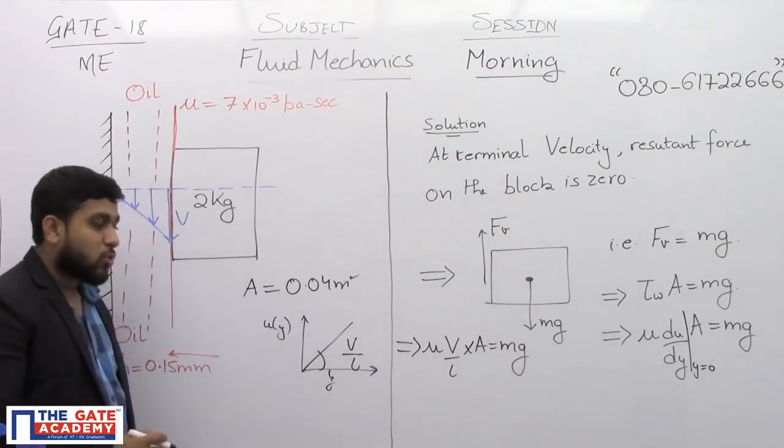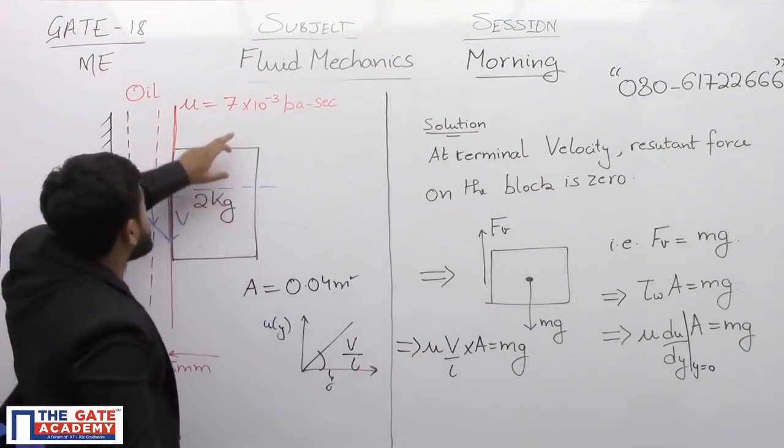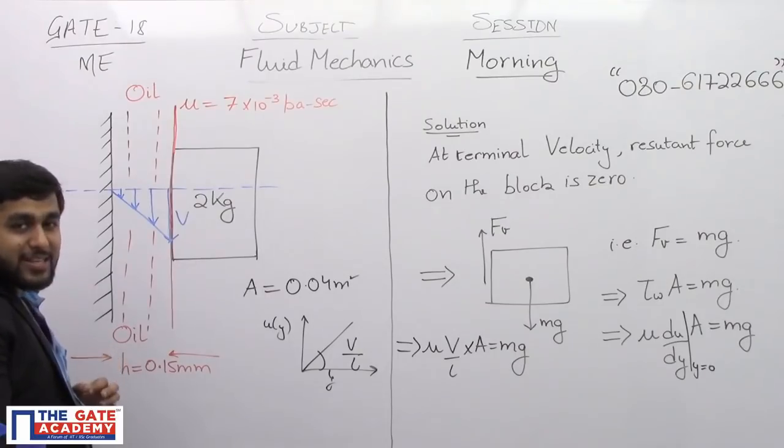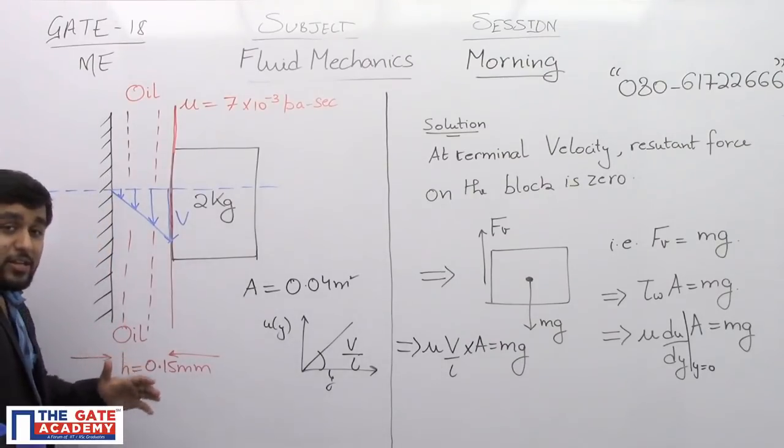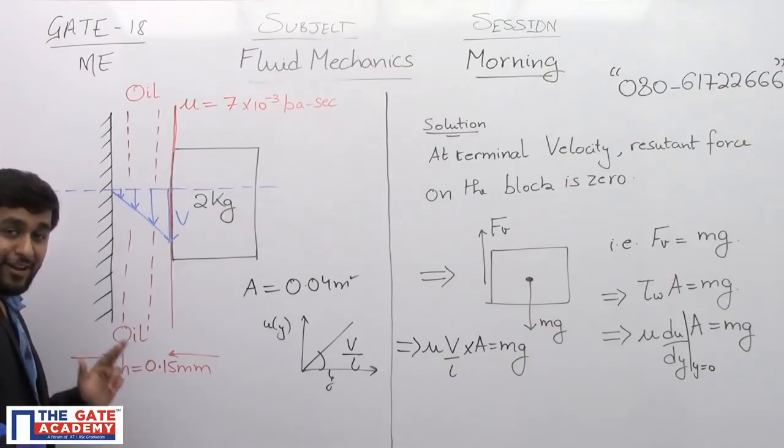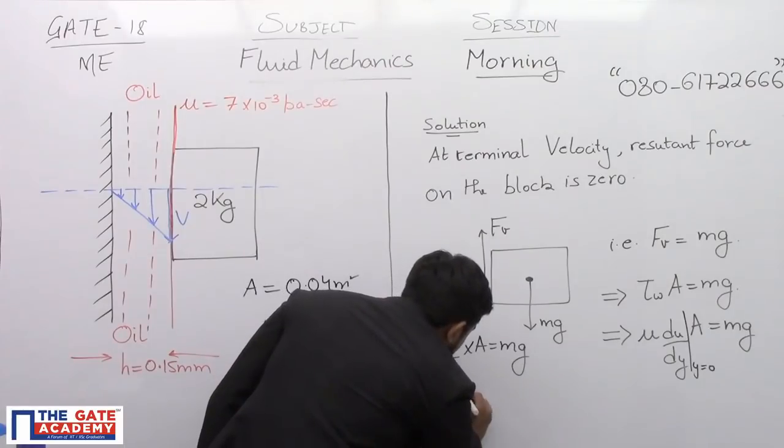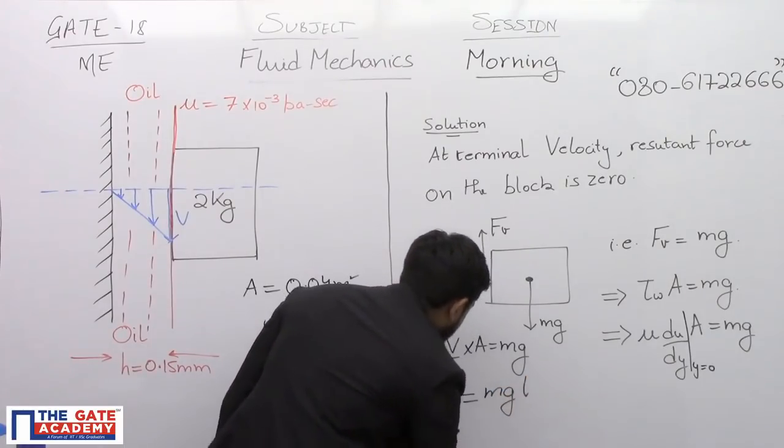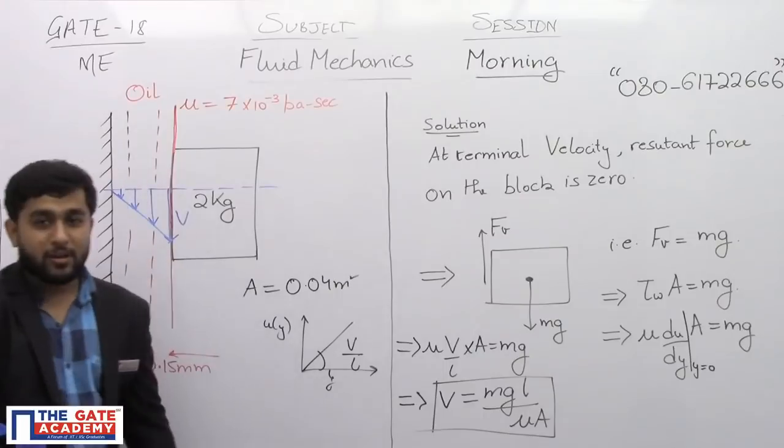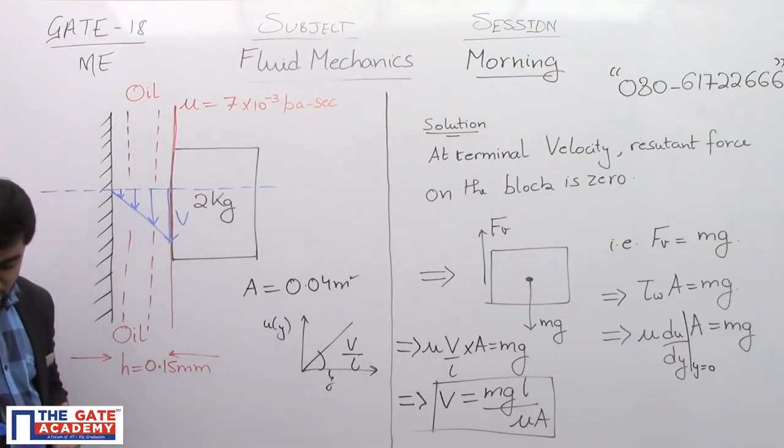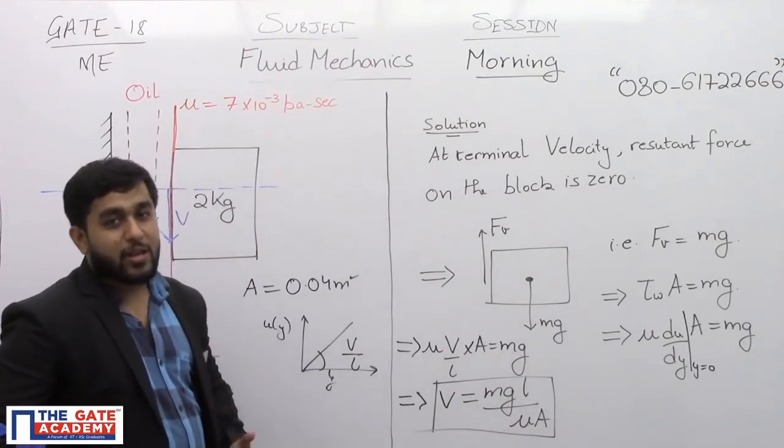So what we have is we have mu capital V by L into area is equal to mg. Now in this equation, m is known which is 2 kg, g is known which is 9.81 meter per second square. Dynamic viscosity is given to us which is 7 into 10 raised to the power minus 3 Pascal second. L is the thickness of oil layer which is also given to us 0.15 mm. But since we are writing other things in SI, so this will become 0.15 by 1000 meters. So when you will substitute everything here, you will get the value of capital V which will be equal to mg L by mu into A. This is the final value of capital V velocity, terminal velocity of the block. And being engineering students, I hope you can substitute all the values here and get your numerical answers.